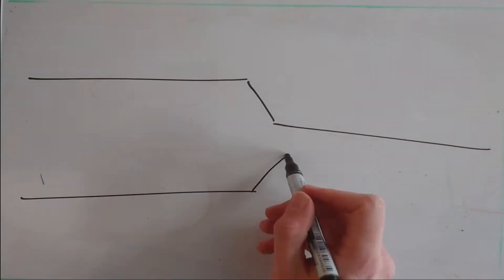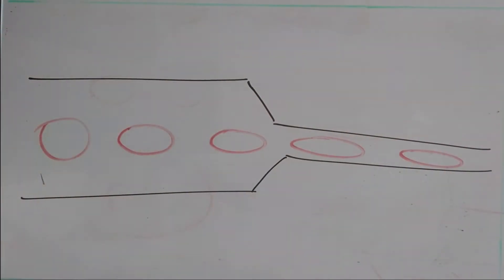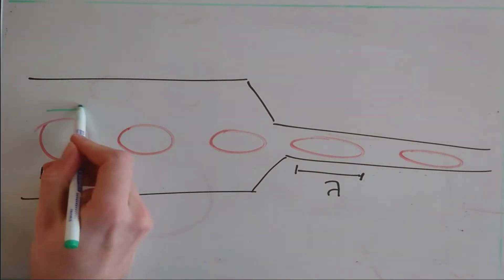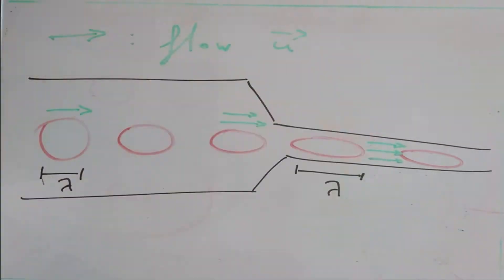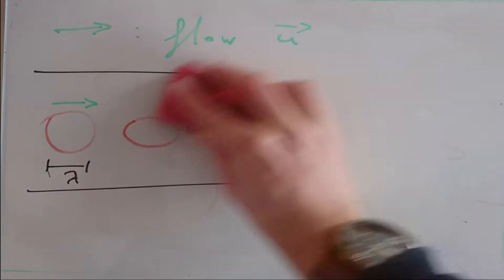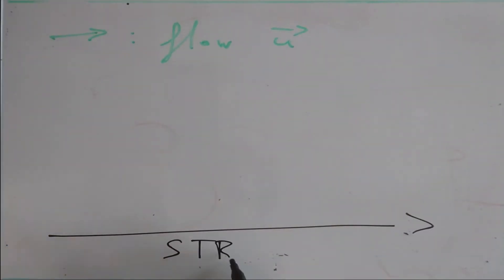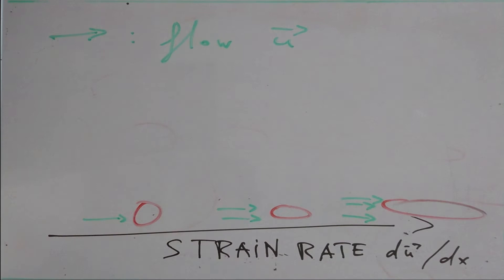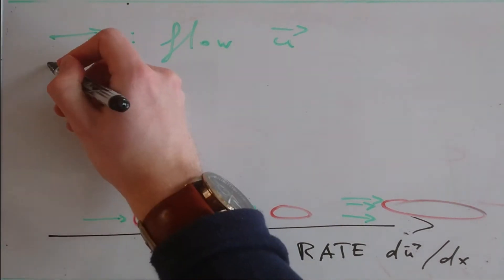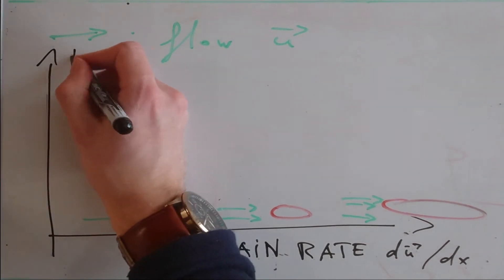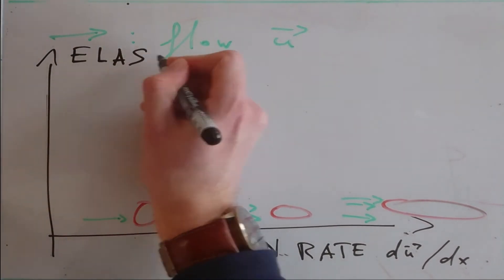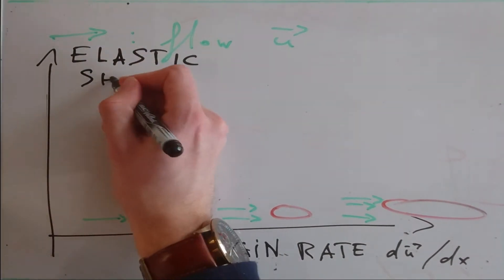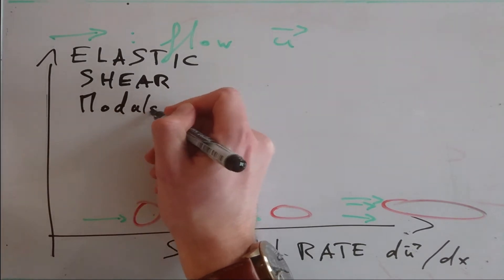In such regions, the stress on the cell increases and stretching and elongation is observed. Modellization of such behavior fits a strain-hardening model, demonstrating an increase in cell stiffness.